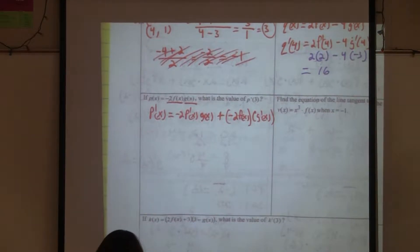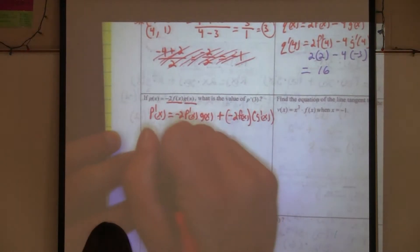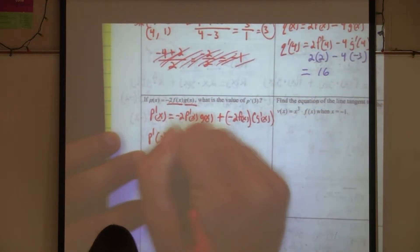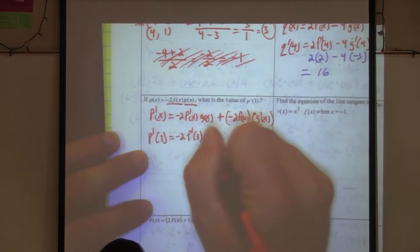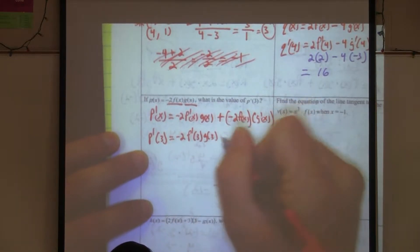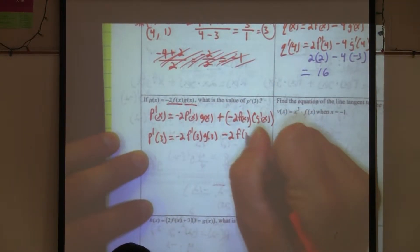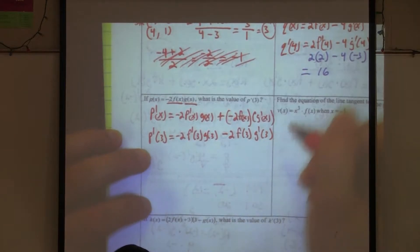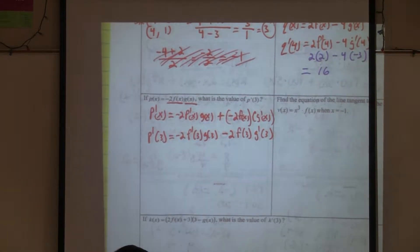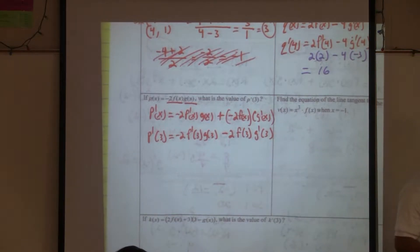We've got our derivative. Now we just have to evaluate it — plug in three. So we want p prime of three: negative two f prime of three times g of three, minus two f of three times g prime of three. What's f prime of three? Negative four.